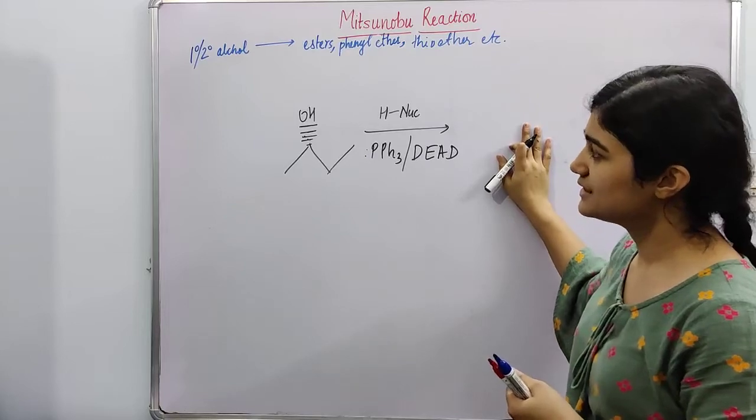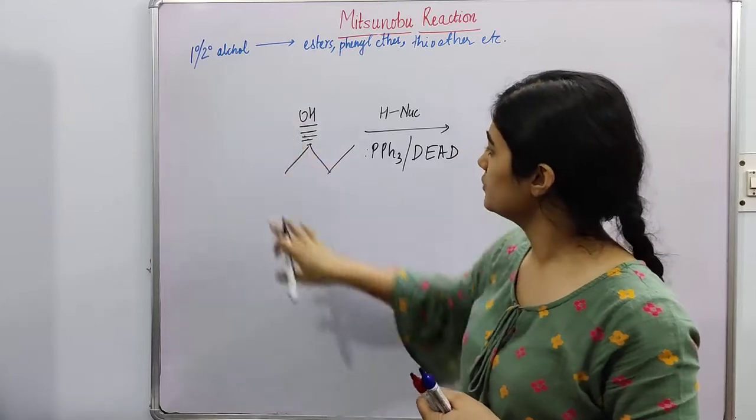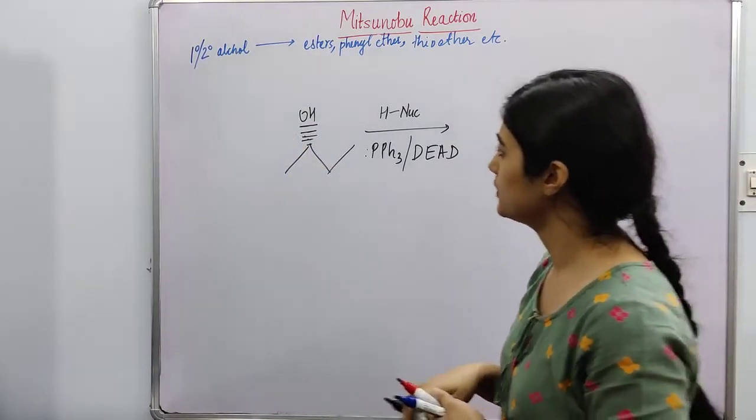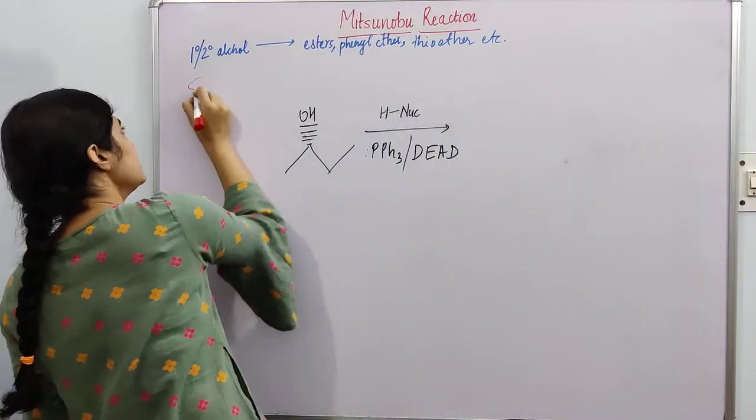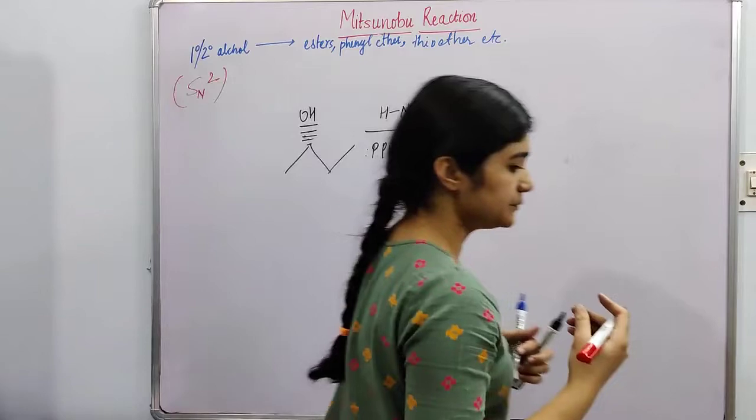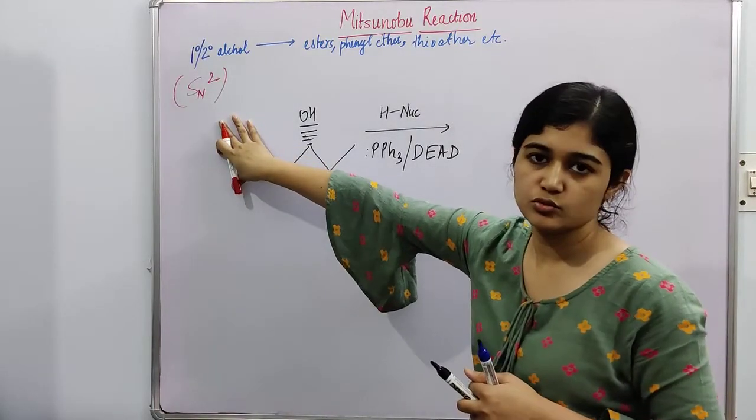There is a reason why only primary and secondary alcohol has been written here. Because this reaction proceeds via SN2 mechanism. The mechanism is called SN2, and only primary and secondary alcohols undergo SN2 reaction.